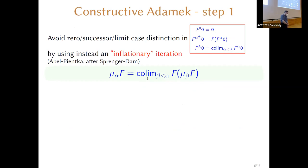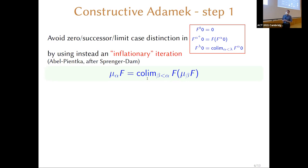The first step is to get rid of the trichotomy — is the ordinal zero, successor, or limit? One way of doing that, which I learned from Agda's use of size types but which goes back to a paper of Agerbo and Kinker, and they quote Springer and Dam, is to do the same thing at each ordinal stage rather than three different things. Recursively, we've already constructed things for all stages β strictly less than α.